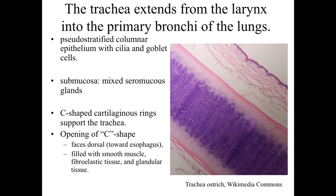As we get down into the trachea itself — extending from the larynx down through the trachea into the primary bronchi — what we're going to see is an epithelium lined by pseudo-stratified columnar epithelium, the classic example of respiratory epithelium. There are lots of goblet cells and cilia to propel the mucus produced by the goblet cells. Underlying the pseudo-stratified columnar epithelia in the trachea, we're going to have mixed seromucous glands contributing to modification of the secretions as air passes through.